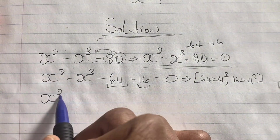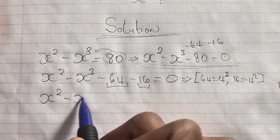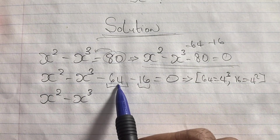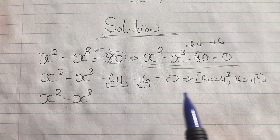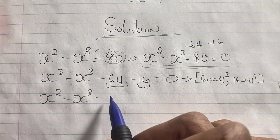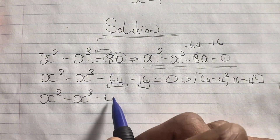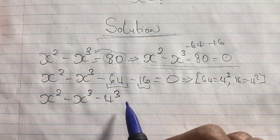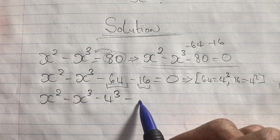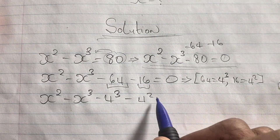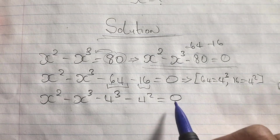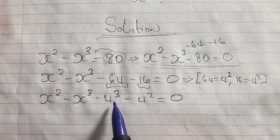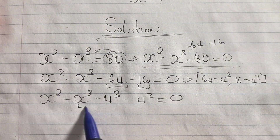We rewrite our equation as x squared minus x cubed minus four cubed, since four cubed equals 64, and then minus four squared, since four squared equals 16. This equals zero. From here we can group our terms.